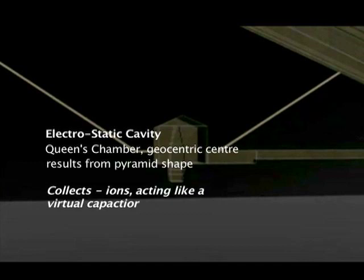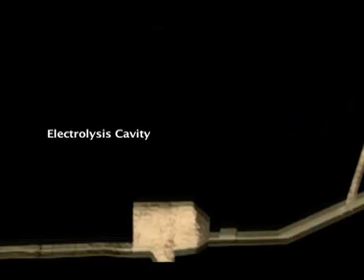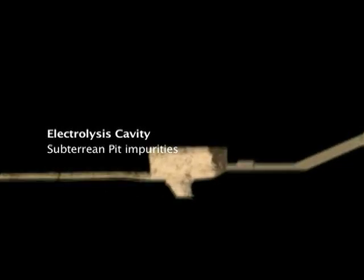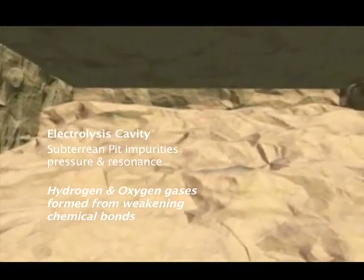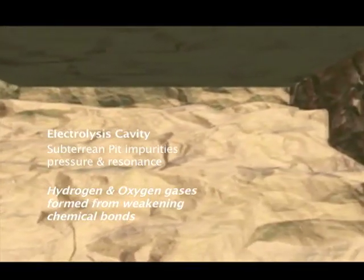This is the subterranean pit, and that is actually quite controversial, because there are impurities in the chamber. There's evidence that water had somehow been pressurized in there, perhaps creating or instigating electrolysis. Water would come through the Nile and flow into this chamber. There's also a shaft that goes straight down into the Earth, providing that resonant frequency of the Earth, the pulse of the Earth, to help sound project itself throughout the pyramid.